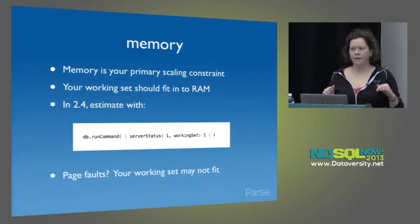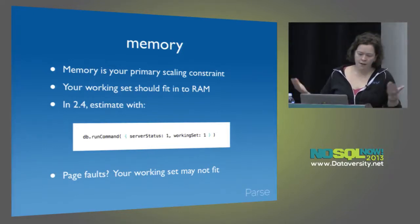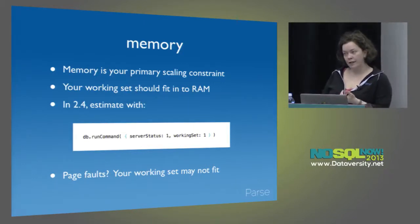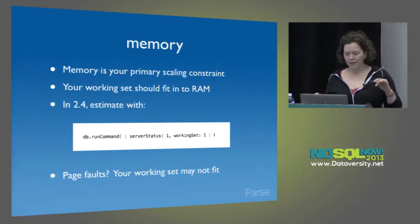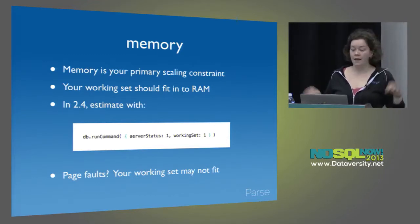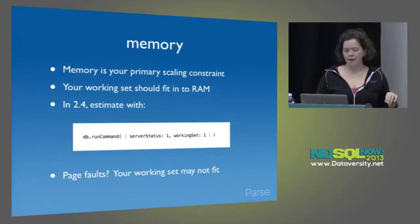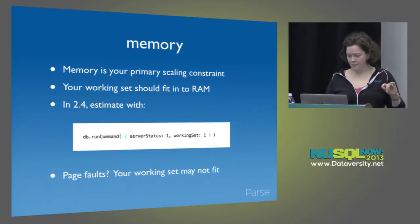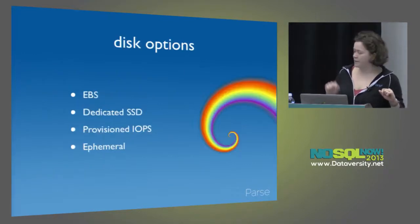If you don't have enough RAM for your working set, you have two options: you can get more RAM, or shard your data. Obviously the only real scaling eventually is horizontal scaling, but sometimes you can just throw money at the problem — and that is awesome. RAM is super important. Obviously it's not the only thing that matters unless your data completely fits into memory. You still have to hit the disk for writes.